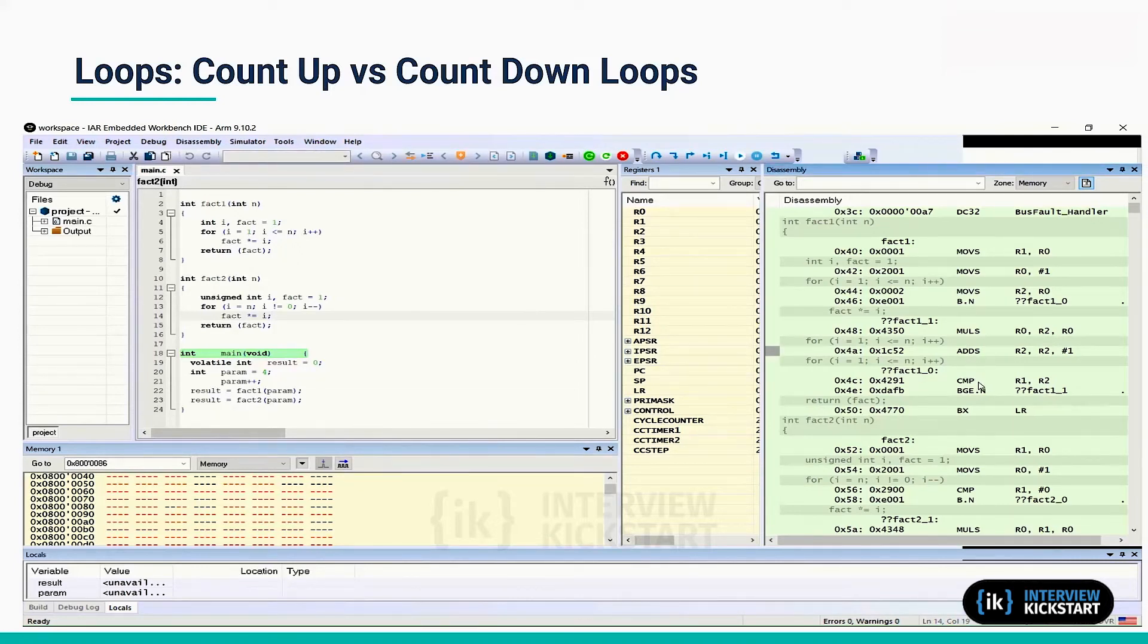Subsequently, a comparison is made with the end condition which is with n. So r1 and r2, r2 is holding the index, r1 is holding the terminal value n. And if it is greater than or equal to, it loops back. And when it is equal, it is actually greater than or equal to, it will exit.